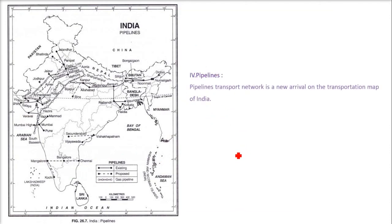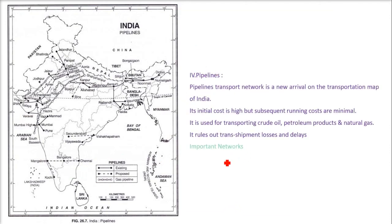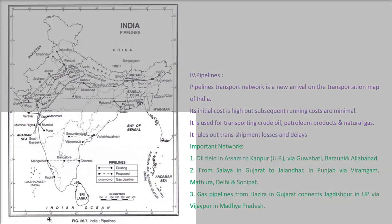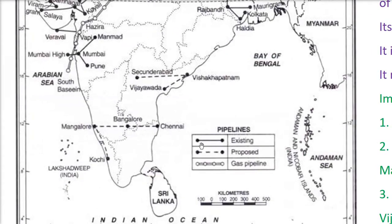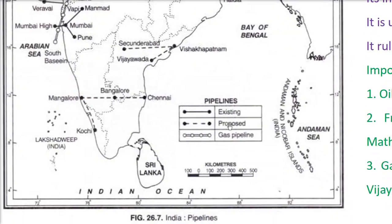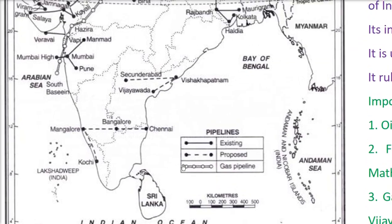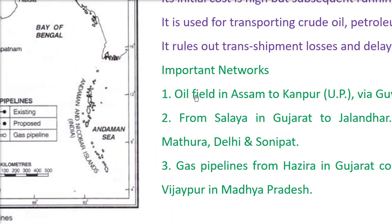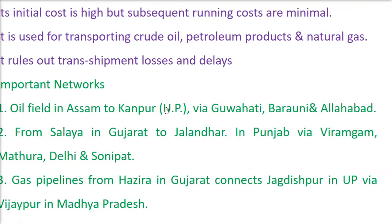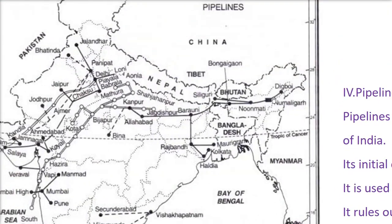There are three pipelines. First, visualize that the dark lines show the existing pipelines, the dotted lines are the proposed pipelines, and another shows the gas pipeline. The first pipeline goes from the oil fields in Assam to Kanpur via Guwahati, Barauni, and Allahabad. From Assam it goes up to Barauni — this is Barauni on the map.